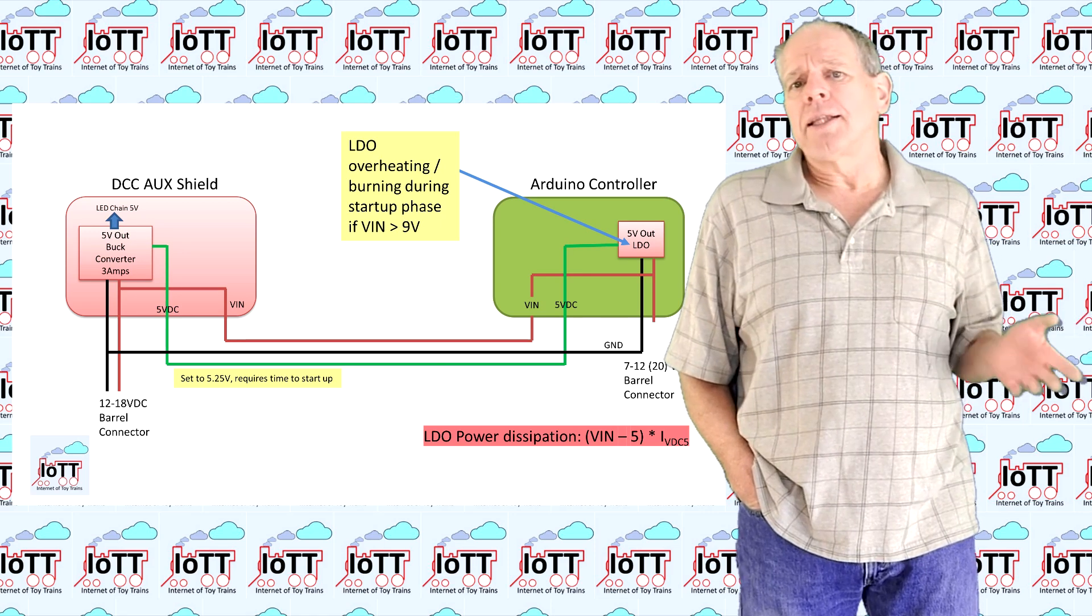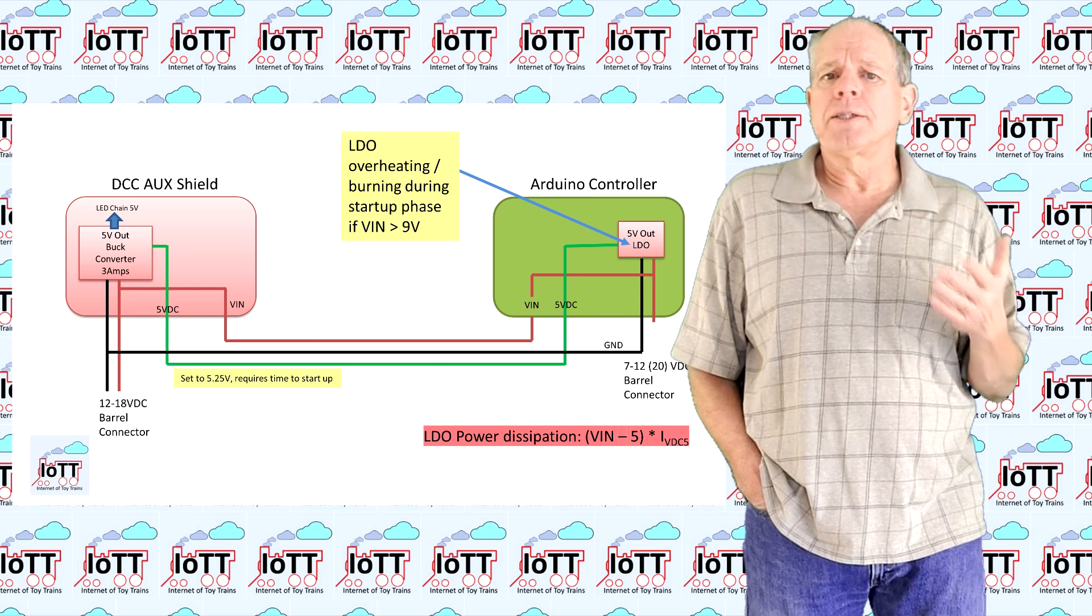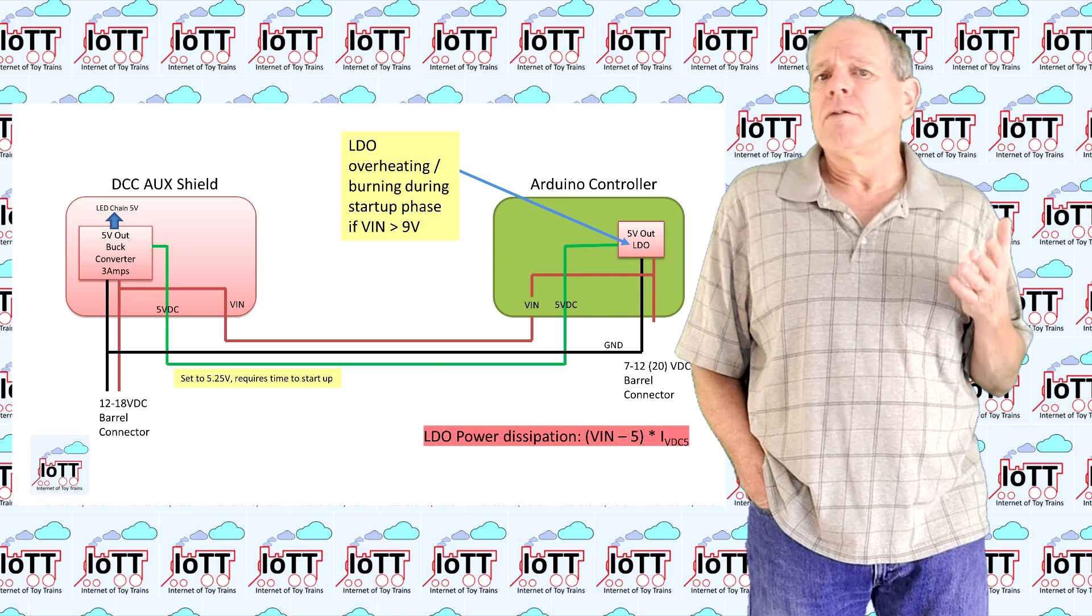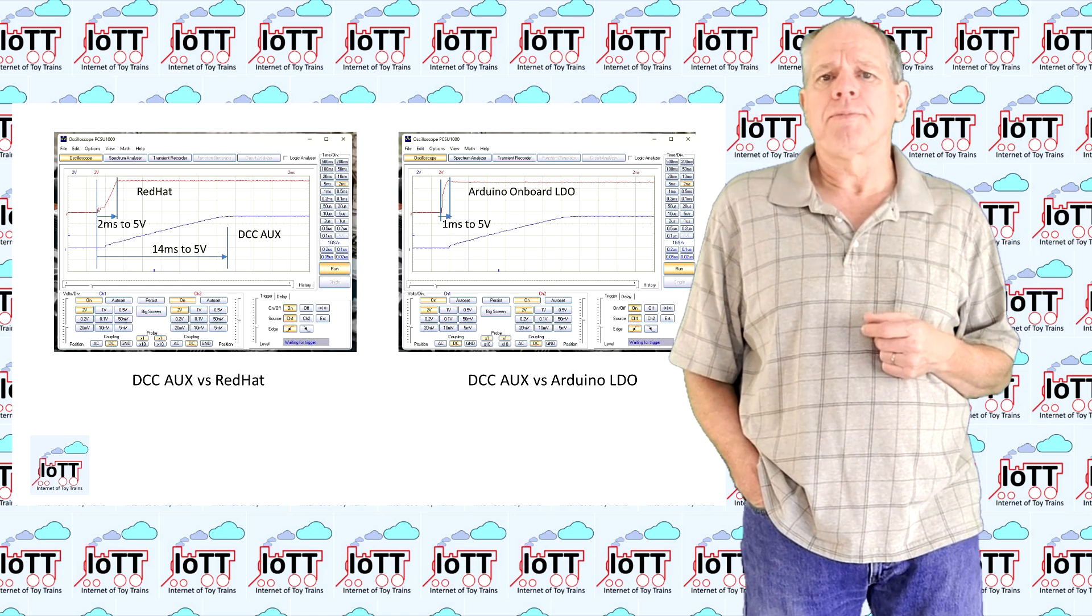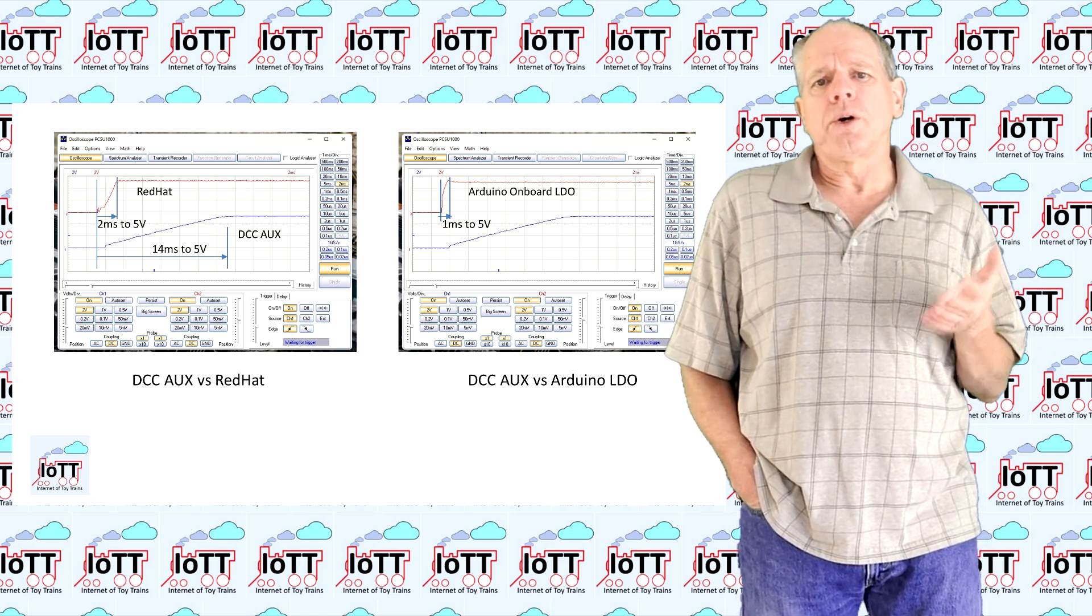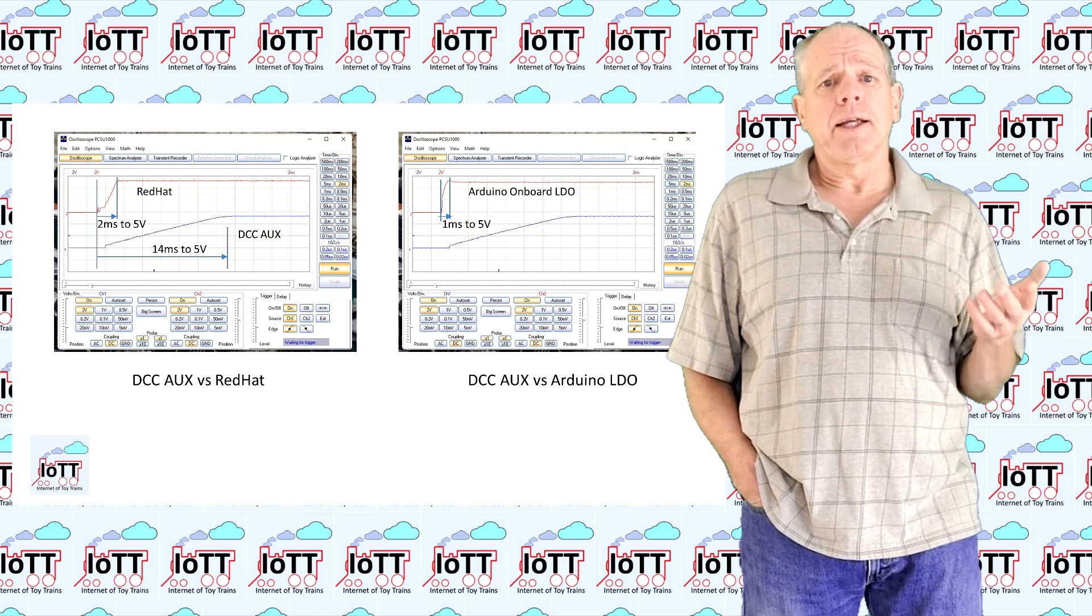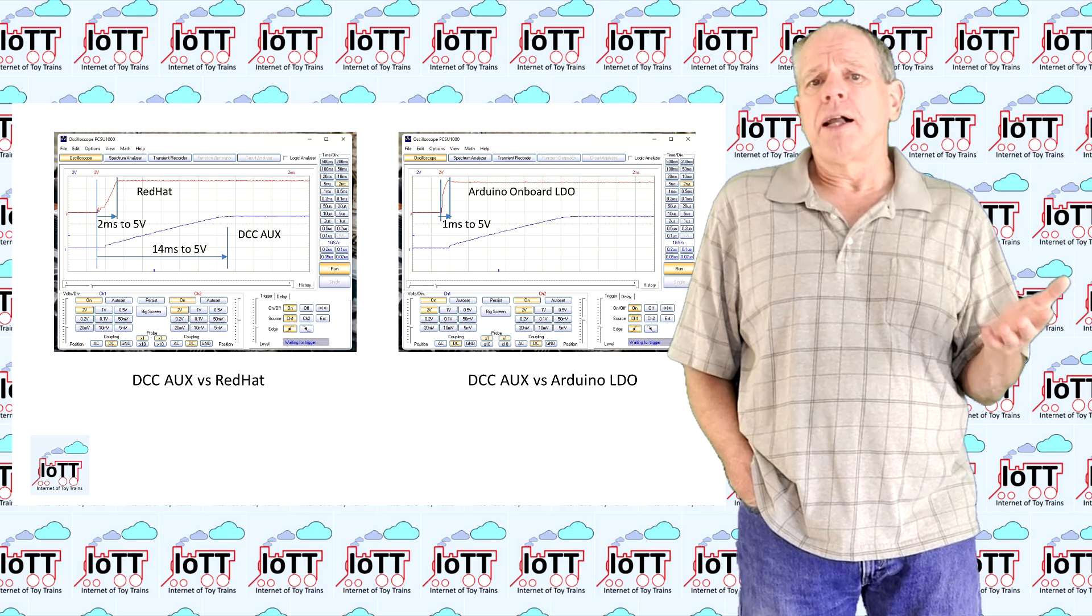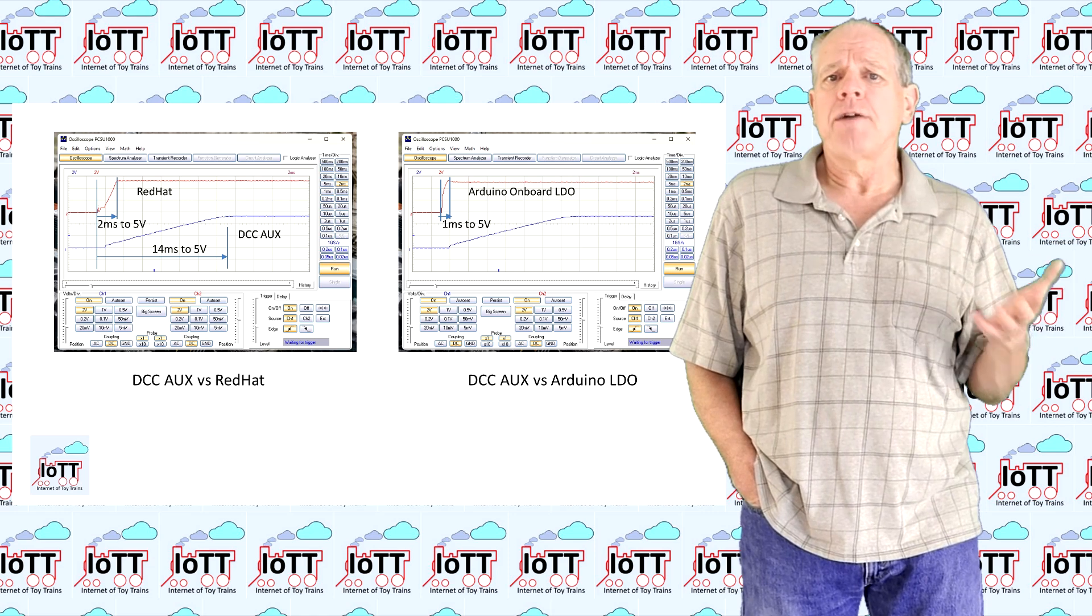So I decided to have a closer look at the startup behavior and compared it to the startup sequence of the Red Hat DC-DC converter, which I knew was working properly at all voltage levels. This oscilloscope shot shows the two curves when power is applied. Quite a difference. The Red Hat converter needs about 2ms to start, while the AUX shield takes about 13ms to reach 5V.